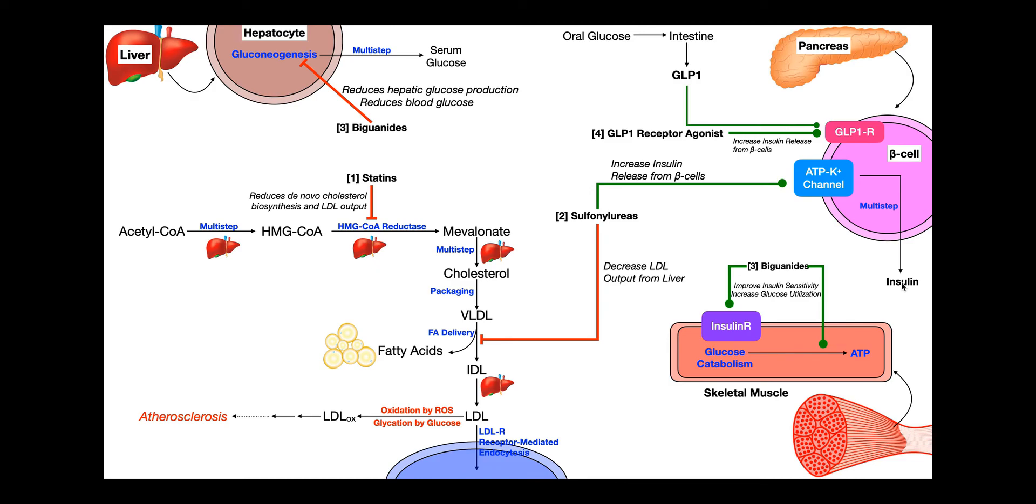Now, one prerequisite to using a GLP-1 receptor agonist and sulfonylureas is that the individual has to have some pre-existing insulin synthesis and release. It will be diminished because it's type 1 diabetes, but as long as they have some and those cells are not completely obliterated, they will be able to make more of that insulin.